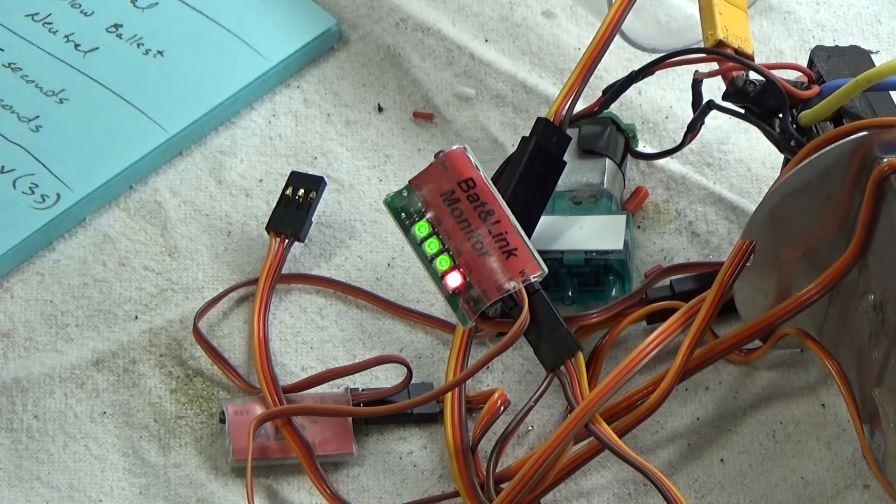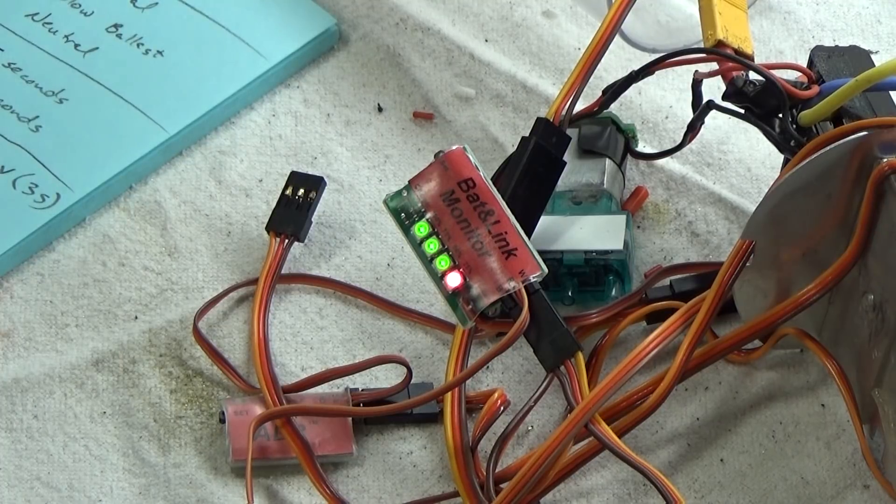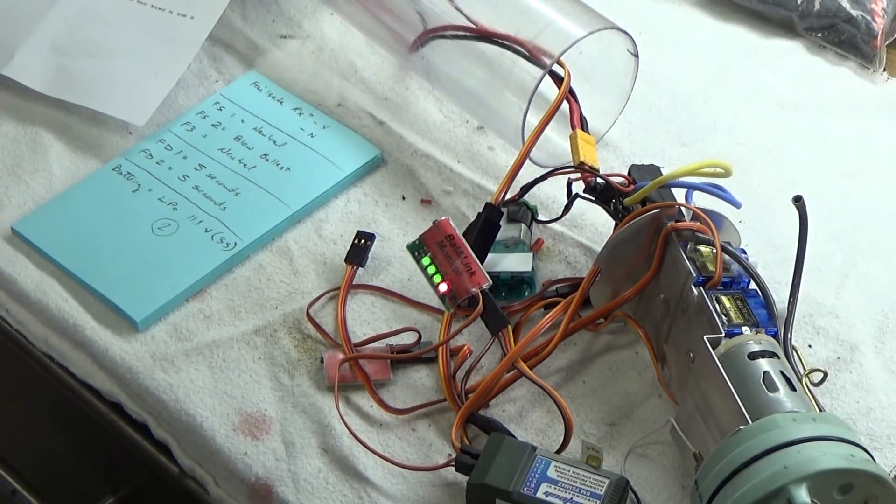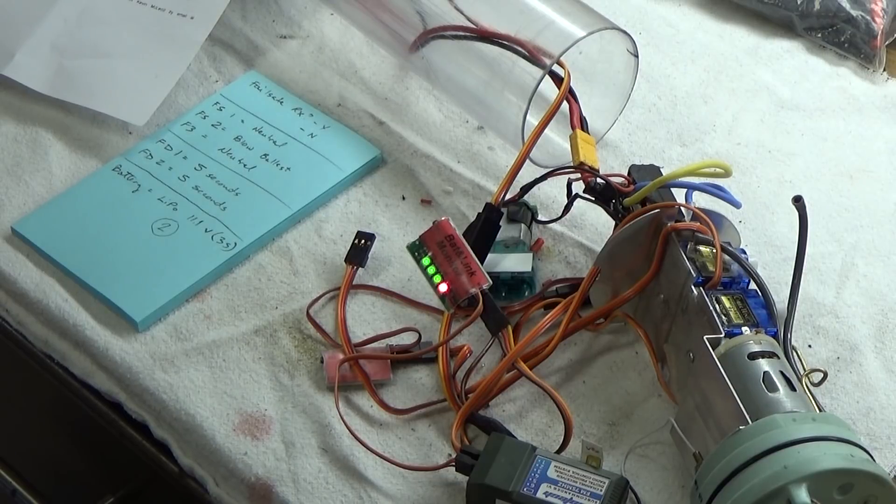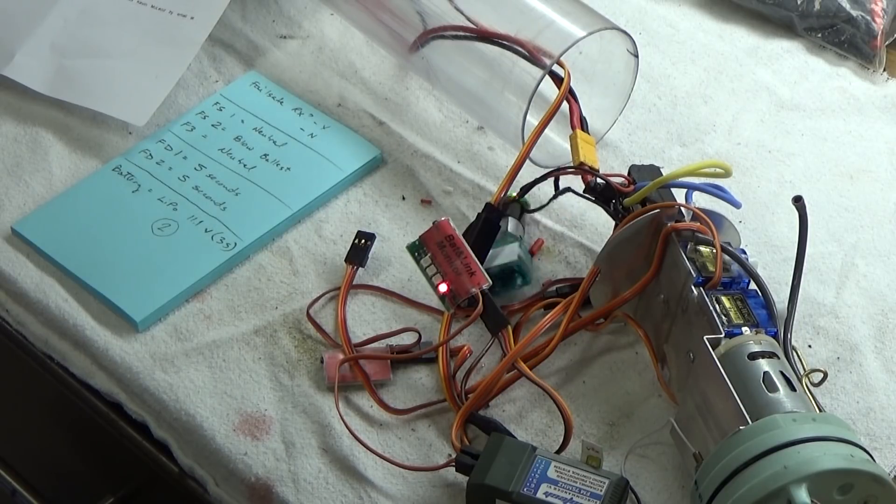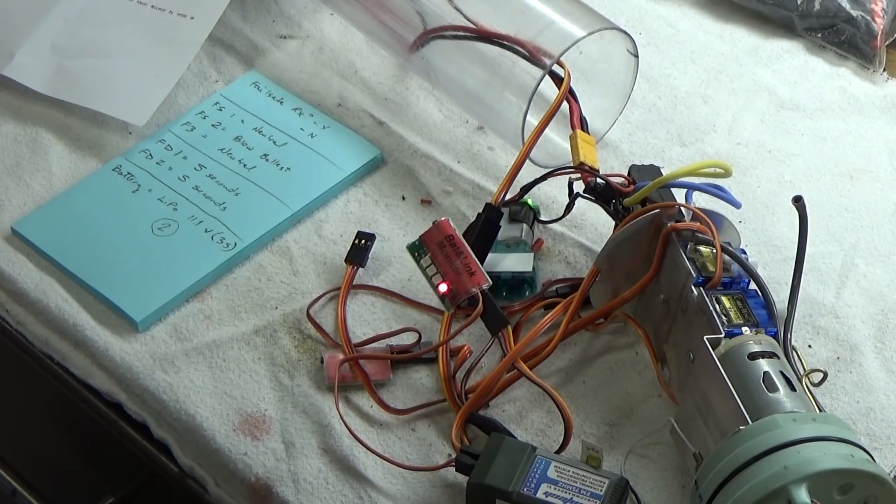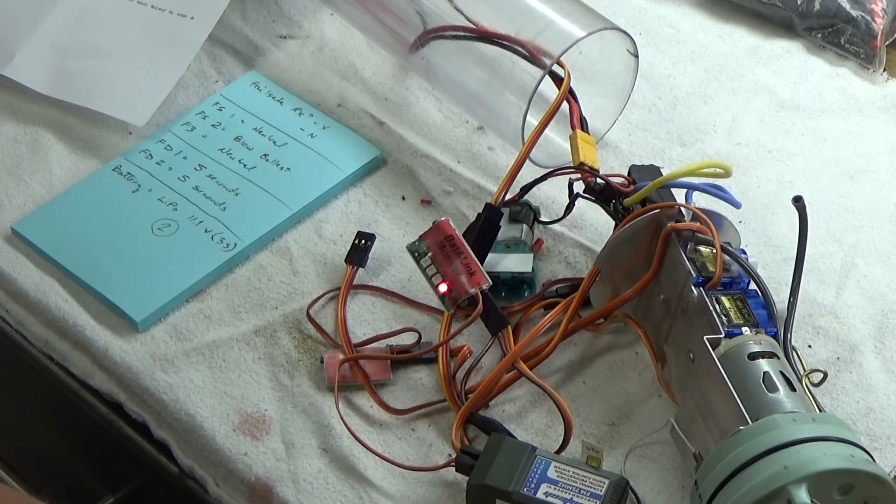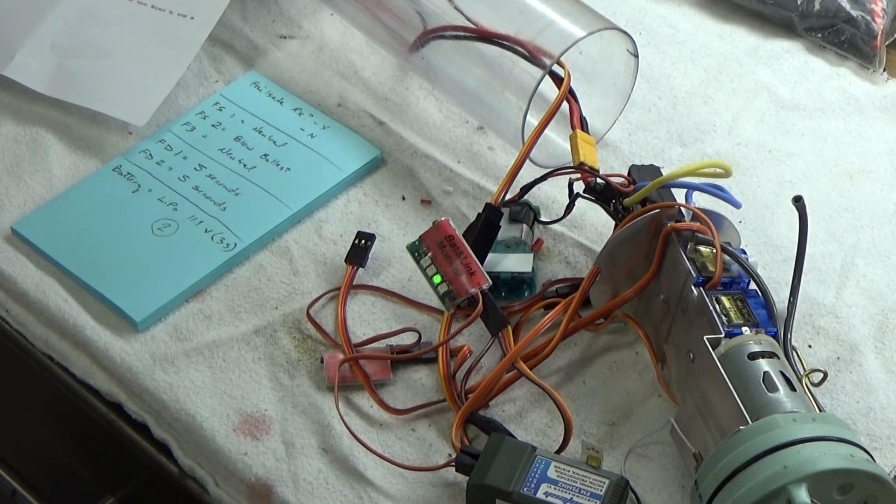Now what we can do is test the functionality of this. In order to do that, I am going to turn off my transmitter. Hopefully five seconds will elapse and the pump should kick on for five seconds and then stop. Well, that was pretty darn cool. I'm going to turn the power back on my transmitter. Battery link is happy, batteries are charged up, everything seems to be working.